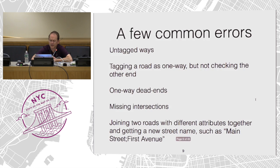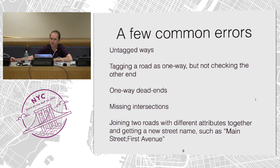Some common errors: untagged ways — somebody's drawn geometry but there is no attribute on it. Tagging a road as one-way but not checking the other end, so you've made a very long one-way road and screwed up traffic. One-way dead ends, missing intersections, and joining two roads together so that you get mutant names like Main Street semicolon First Avenue.